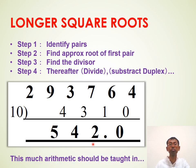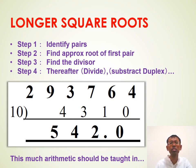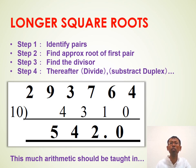This much arithmetic should be taught in all elementary schools in the world. When I teach Vedic mathematics, even 7- or 8-year-old children can do these 6-digit square root problems without using pen and paper. You don't need to be born a genius to do this — you just need to be given the right tools to solve these problems.